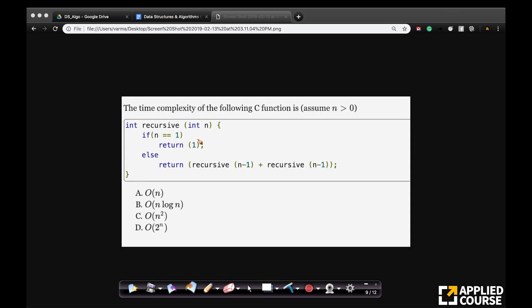So I have a problem here. This is a C function assuming n greater than 0. The question here is the time complexity of the following C function. Here is a function recursive int n. If n equals 1, return 1. Otherwise, return recursive(n-1) plus recursive(n-1). So what is the recurrence relation I have? T(n) equals T(n-1) plus T(n-1) plus some constant for all of these testing. Plus some constant. This is the recurrence relation that I have.